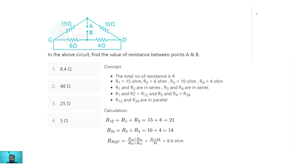Since point C and point D are short circuited, they can be considered as a single point. So suppose this is point A, this is point B, and C and D are merged into one single point — let's call it point C-D.